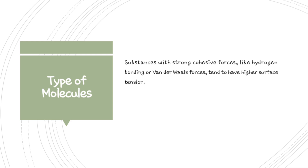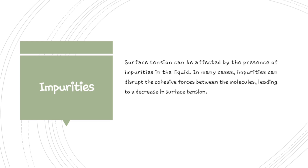The third factor affecting surface tension is impurities. Surface tension can be affected by the presence of impurities in the liquid. In many cases, impurities can disrupt the cohesive force between the molecules, leading to a decrease in surface tension. For example, when you add a detergent to water, you will observe a decrease in surface tension. The detergent molecules disrupt the cohesive force between water molecules at the surface, reducing surface tension. Here, detergent is nothing but an impurity. So when there is impurity, it may reduce surface tension.